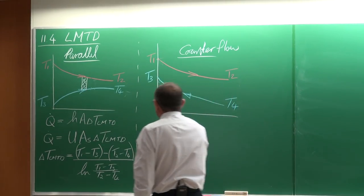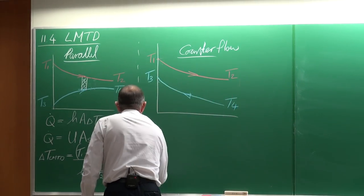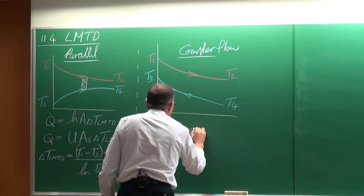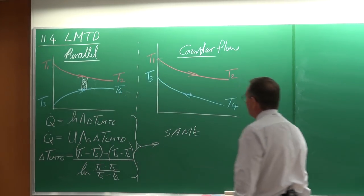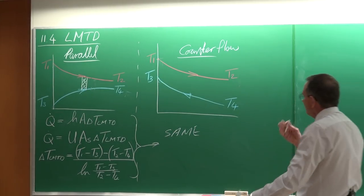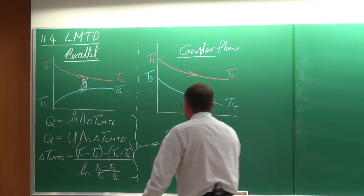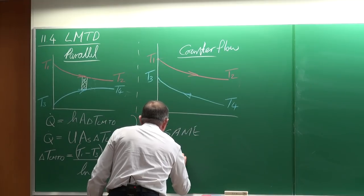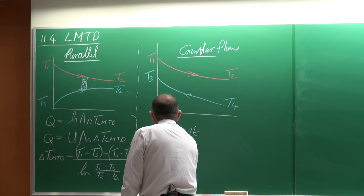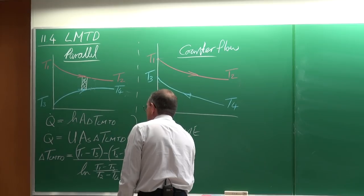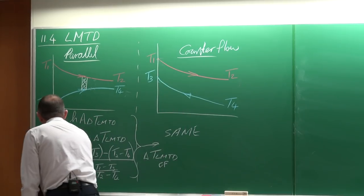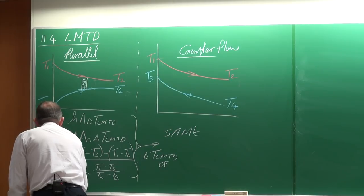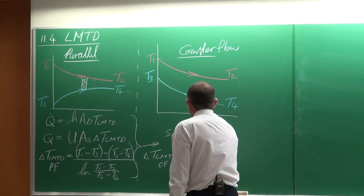For counter flow heat exchangers, it is exactly the same equation. The LMTD for counter flow — we'll call it LMTD_CF — and the LMTD for parallel flow — LMTD_PF — use PF for parallel flow and CF for counter flow.